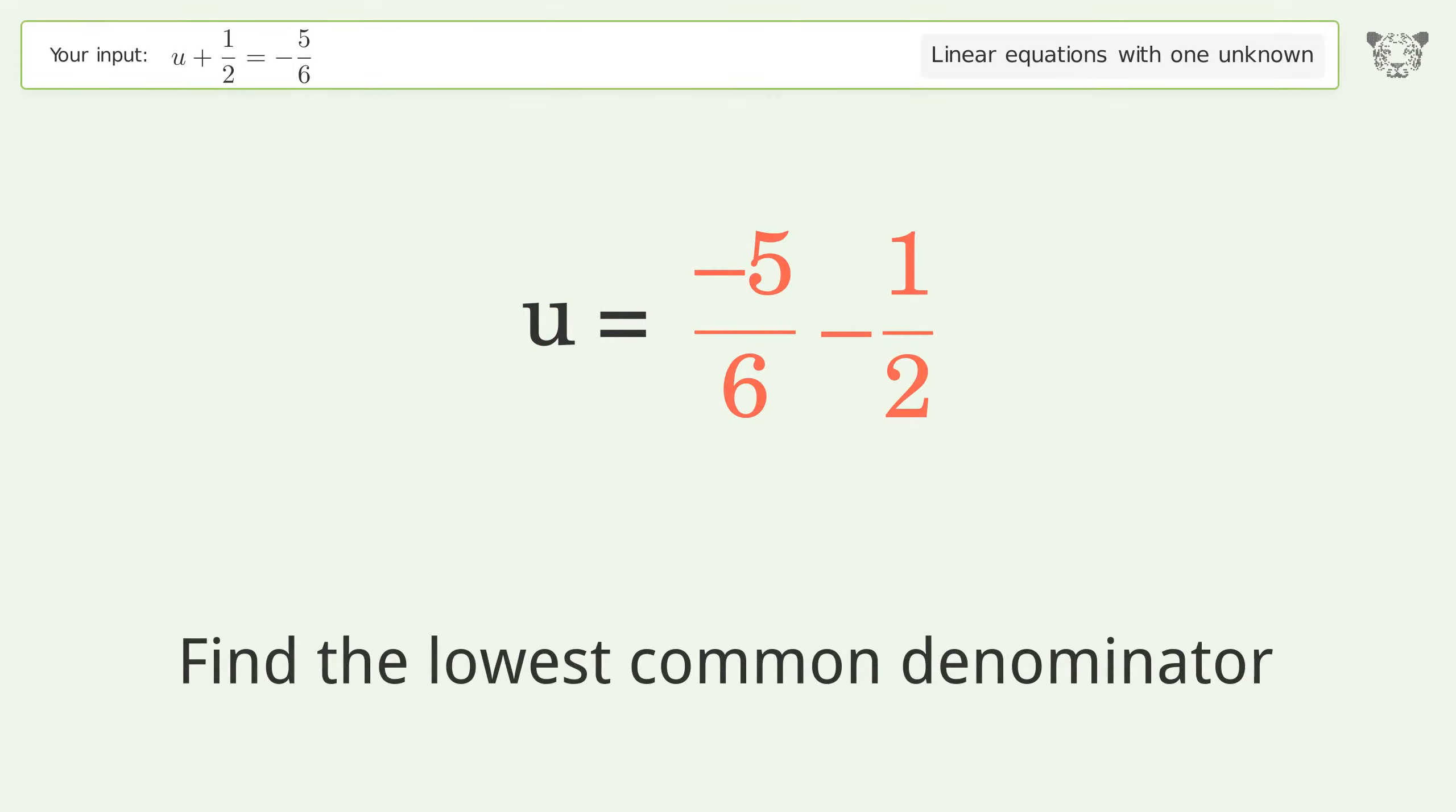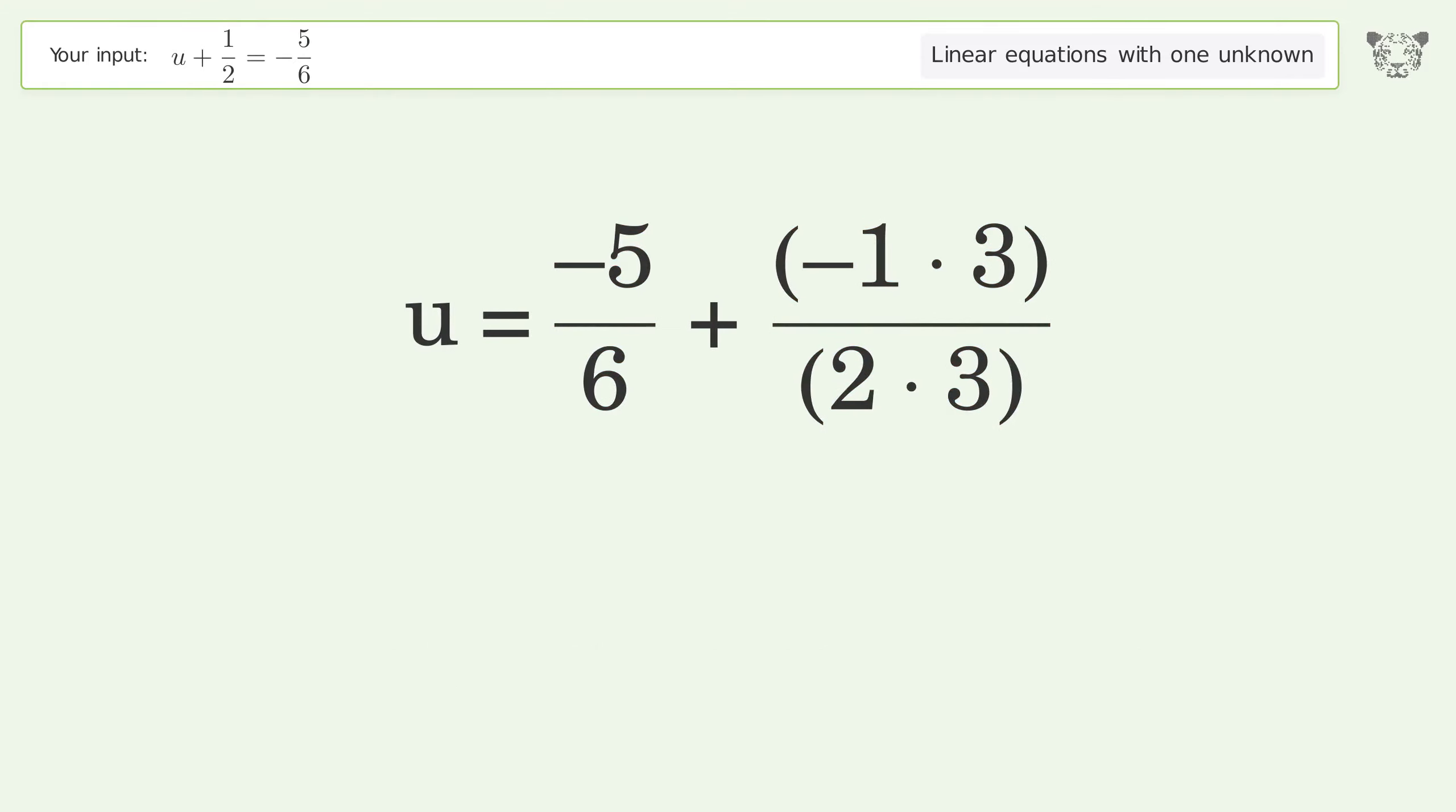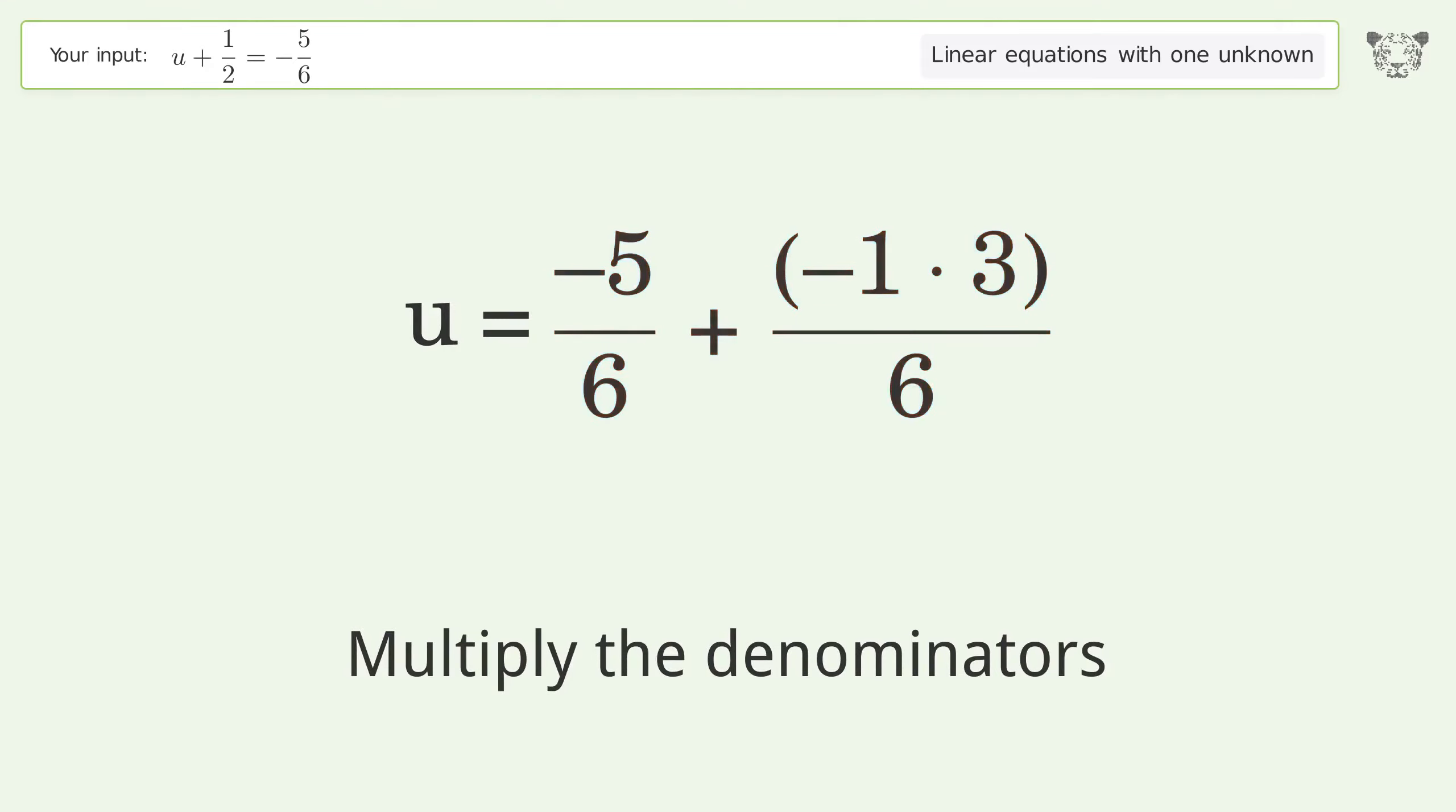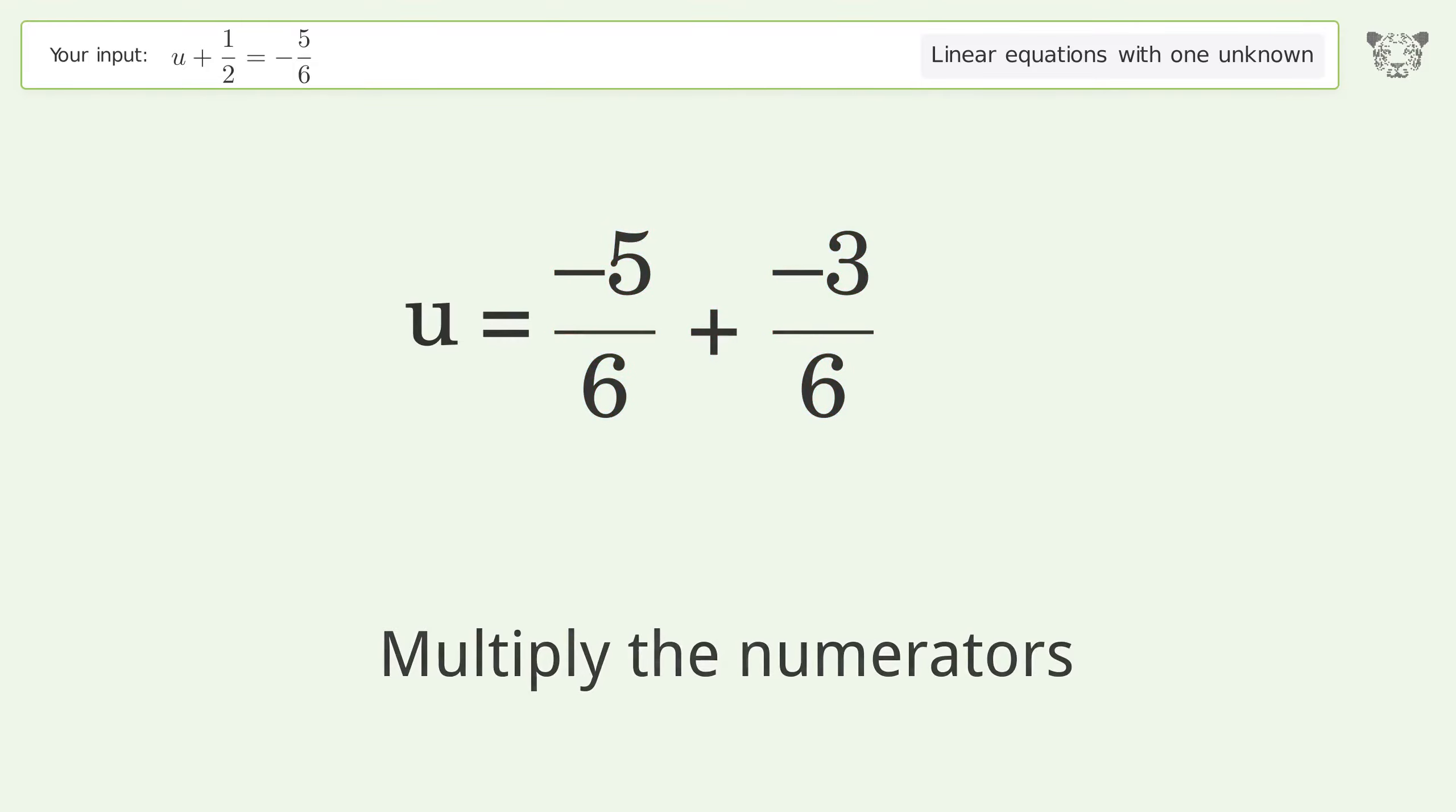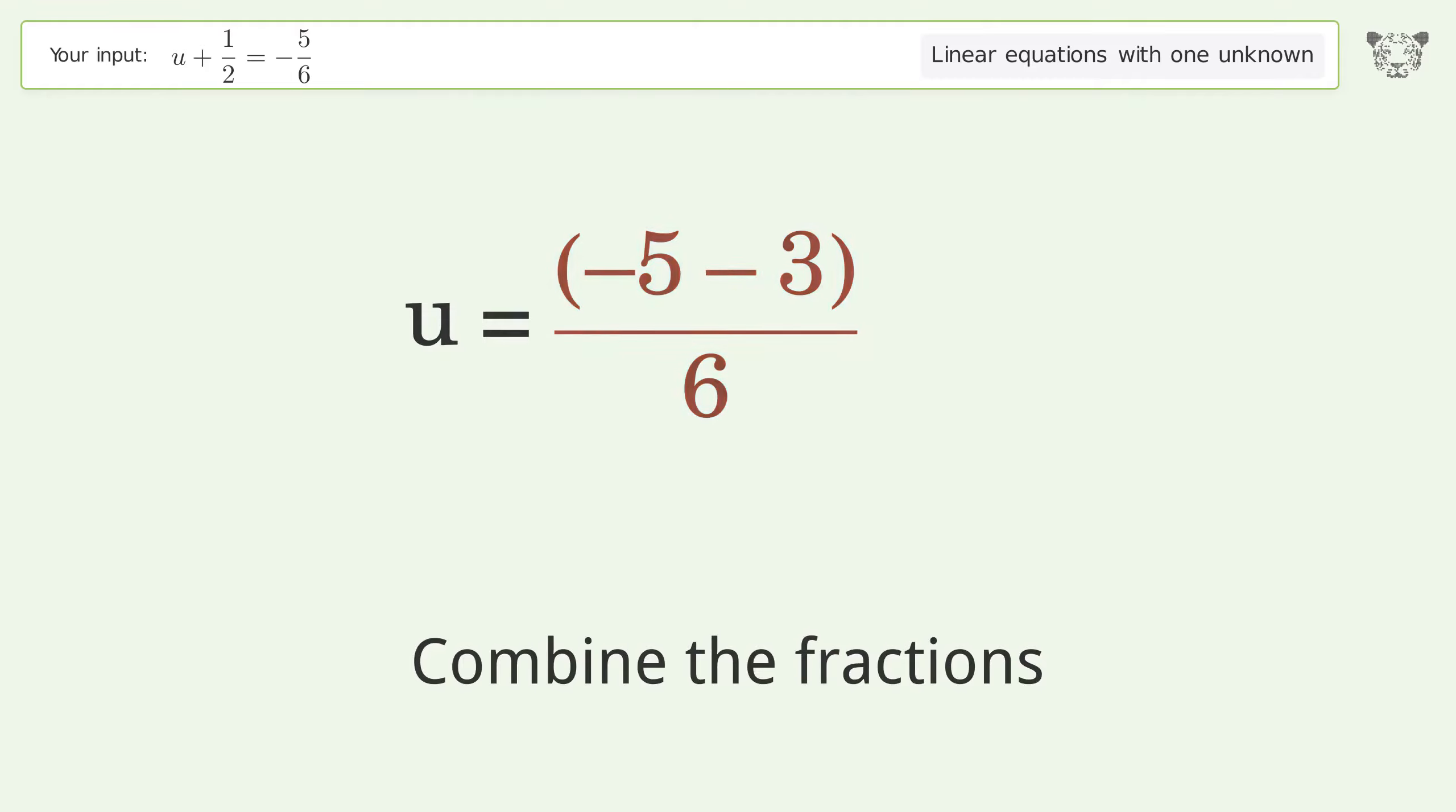Find the lowest common denominator by multiplying the denominators. Multiply the numerators, combine the fractions, and combine the numerators.